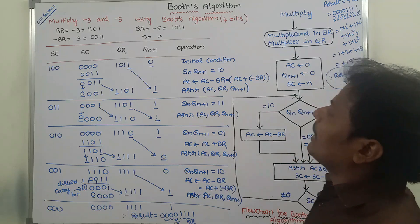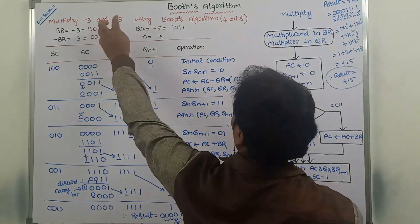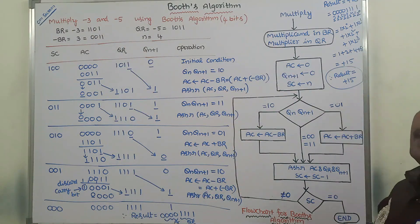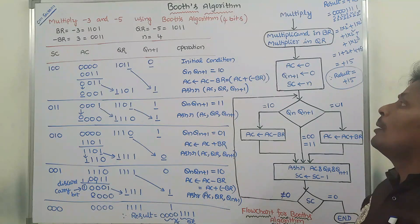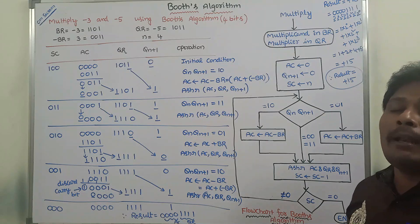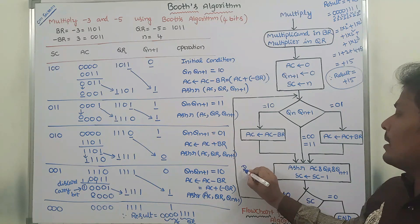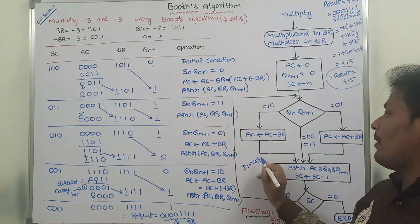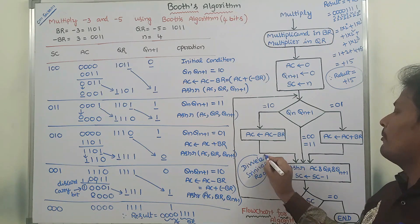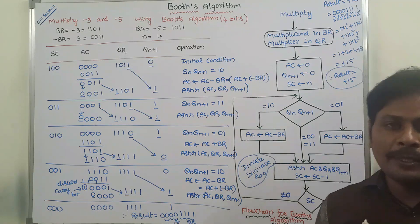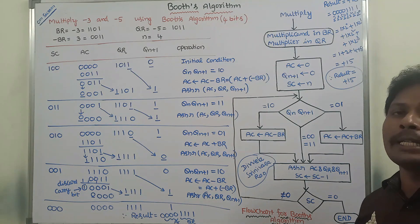In this way, we solve the minus 3 and minus 5 multiplication using Booth's algorithm. Minus 3 multiplied by minus 5 gives us a result of plus 15. Thank you for watching this video. If you like this video, please click the like button and the bell icon to get future updates after subscribing to the YouTube channel, Devela Srinivasarao. Please put any doubts in the comment section and I will clarify them. Please see the previous videos for better understanding of Booth's algorithm multiplication.